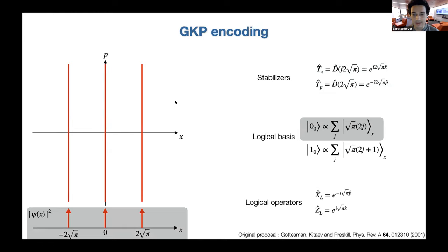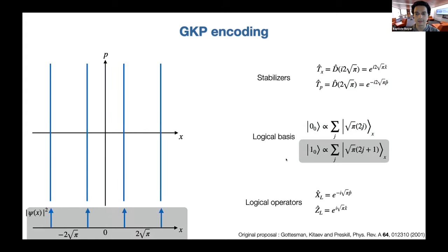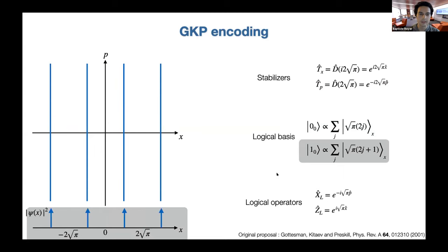The first stabilizer T_x is a function of x, so its eigenstates are eigenstates of the x operator — infinitely squeezed states in x — and the +1 eigenspace consists of all x eigenstates at integer multiples of √π. Similarly for p: its eigenstates are p eigenstates at all integer multiples of √π. We define the logical basis as follows: the |0⟩ logical codeword is all even multiples of √π in position, and |1⟩ is all odd multiples. The logical X operator is a displacement by √π in x.